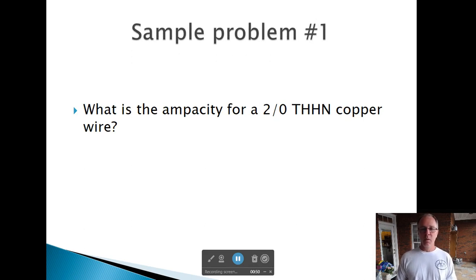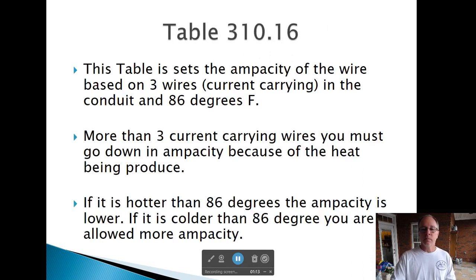Problem number one. What is the ampacity of a 2-Aught THHN copper wire? We've got 2-Aught as the size, THHN as the type of insulation on the wire, and it's copper. Those are the three things we need to know to find out the amperage. So we're going to go to Table 310-16. Table 310-16 is based on there being only one, two, or three current-carrying wires in that conduit or cable and the ambient temperature around that is 86 degrees.